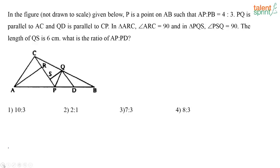Let us look at this question. What is given here? They have given angle ARC is 90 degrees. Yes, in this figure angle ARC is 90 degrees. Then they say that angle PSQ is 90 degrees, and they are saying QS is 6 centimeters. So you have to find out what is the ratio of AP to PD.